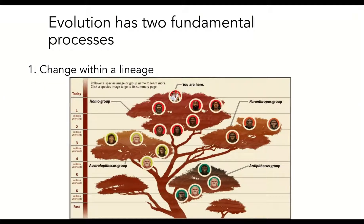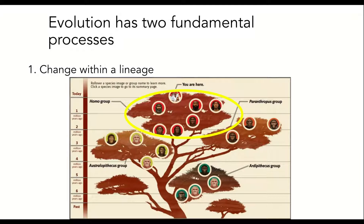Evolution has two fundamental processes. The first is change within a lineage. On this human family tree, the trunk represents a lineage, or line of organisms with shared ancestry, that began about 7 to 10 million years ago. As we trace the trunk up from its roots, we see the genus Homo at the top. Over time, a variety of species emerged within this genus. Recall the Neanderthal and Denisova people we talked about earlier — they are related to humans through a common ancestor, Homo heidelbergensis, who died out as humans and Neanderthals emerged. The variety of members of the genus Homo that emerged from a common ancestor over time illustrates change within a lineage.